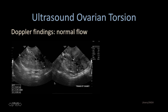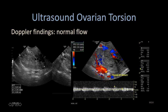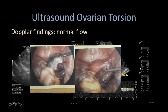At times there can actually be normal flow on a torsed ovary because of that dual blood supply. Here's an enlarged ovary measuring 5.6 centimeters with multiple tiny peripheral follicles and heterogeneous central stroma. A normal low-resistant waveform was seen on the ovary, but at laparoscopic evaluation, this ischemic ovary was visualized. So the findings on grayscale helped us determine that this is, indeed, a torsion ovary.